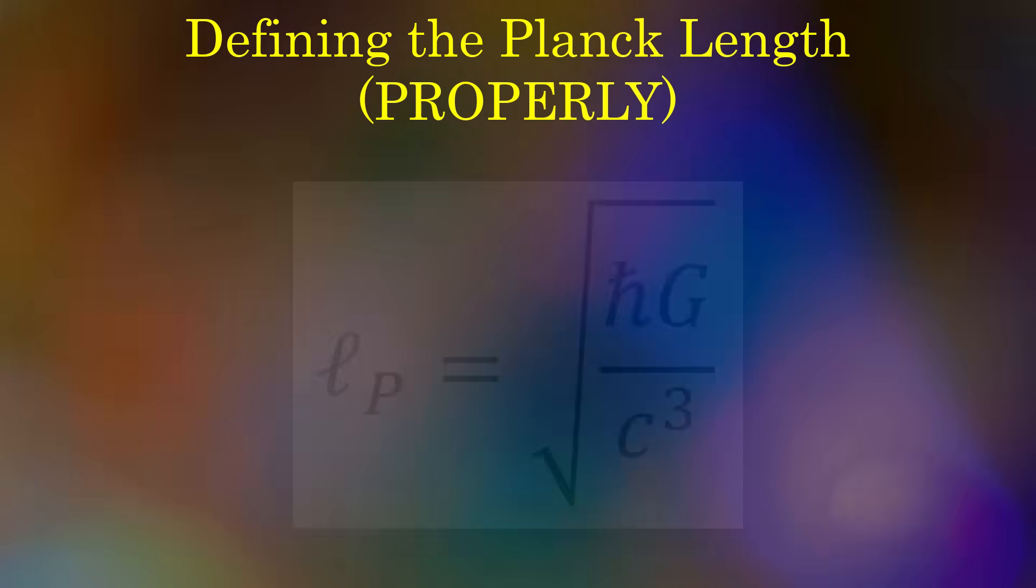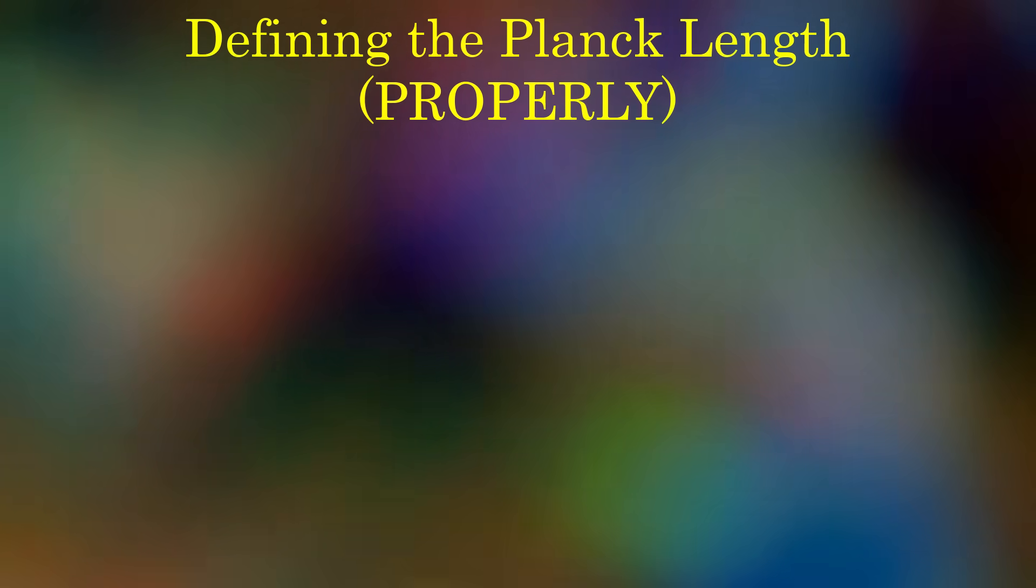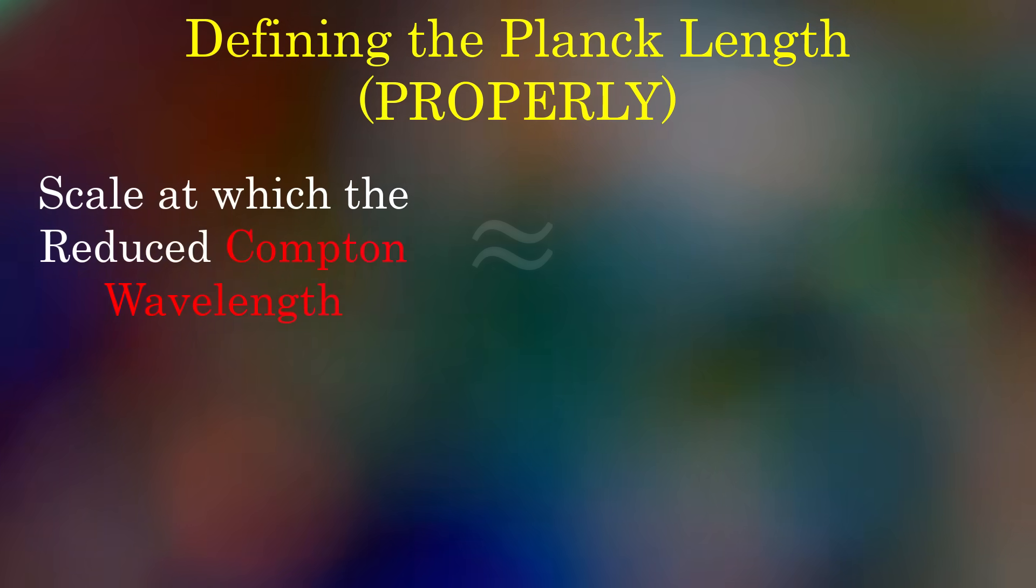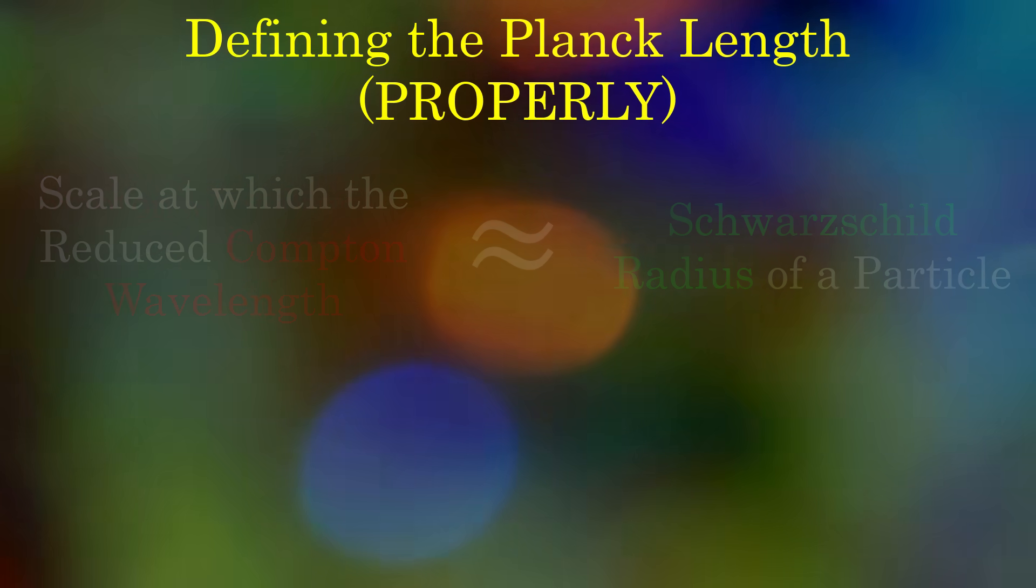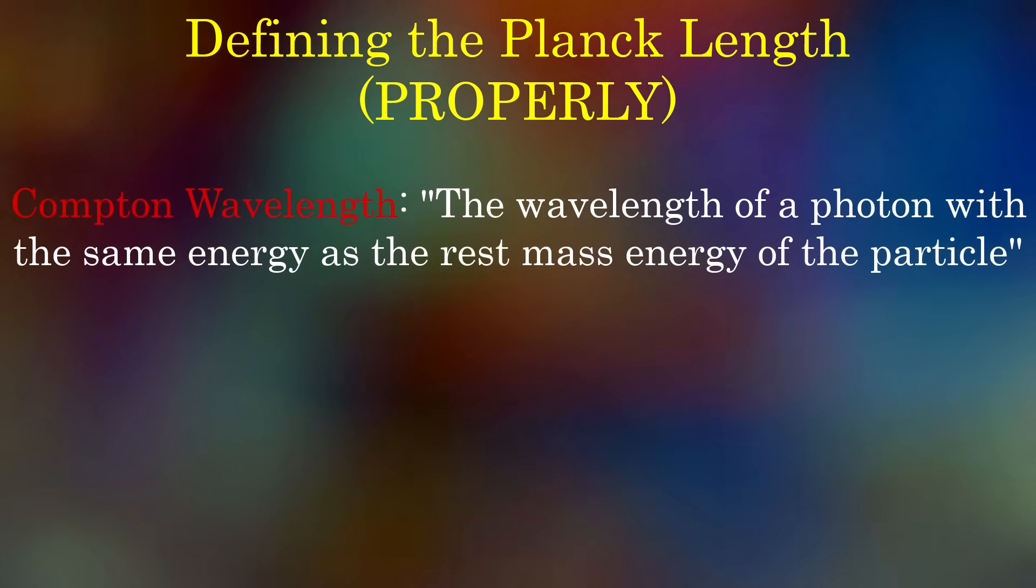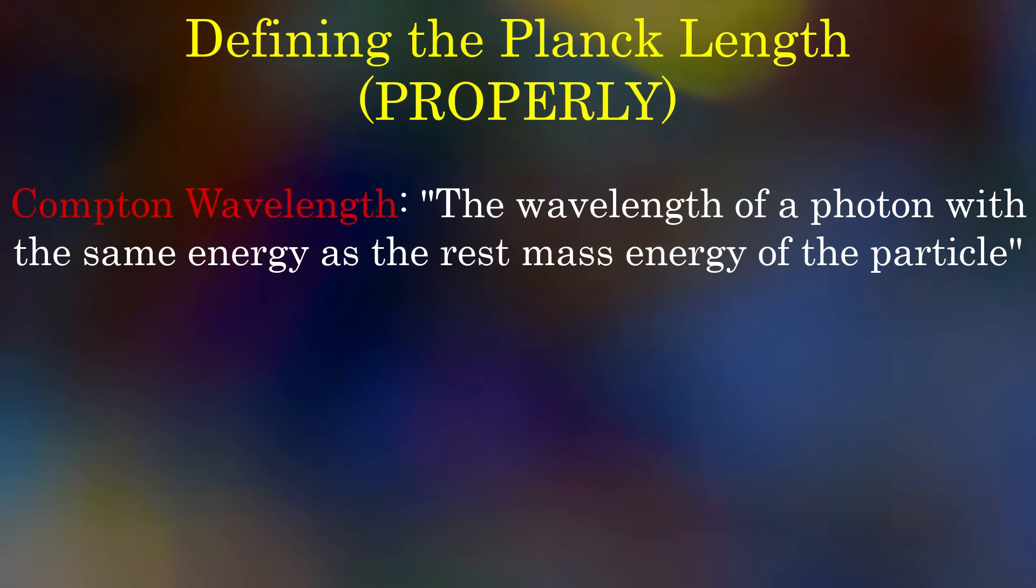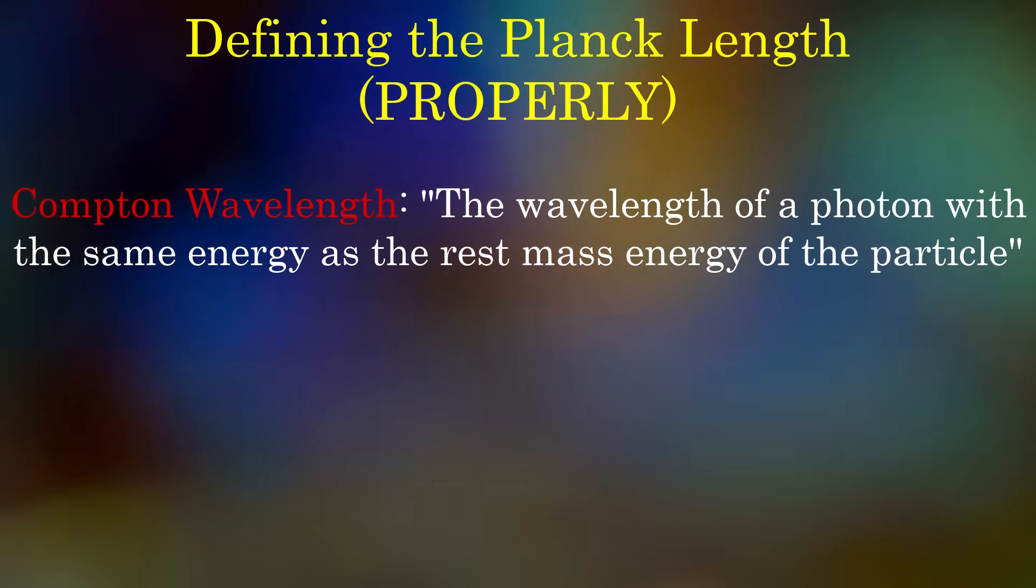The proper way to arrive at the Planck length can be through considering a particle whose reduced Compton wavelength is comparable to its Schwarzschild radius. Let me be more precise. The Compton wavelength of a particle is the wavelength a photon of light would have if it had the same energy as the rest mass of the particle.